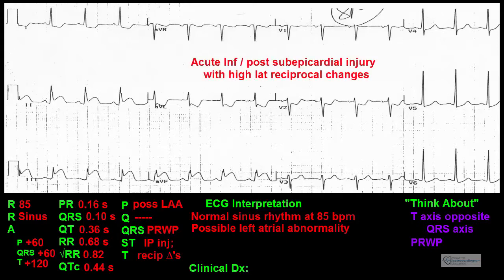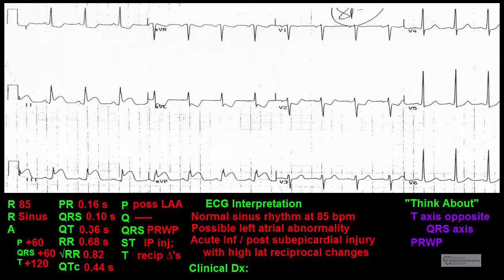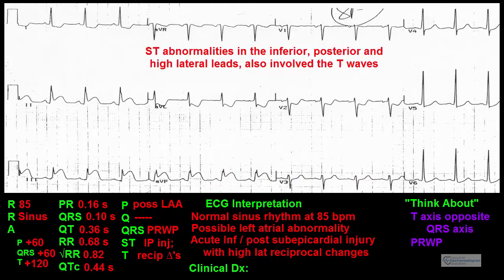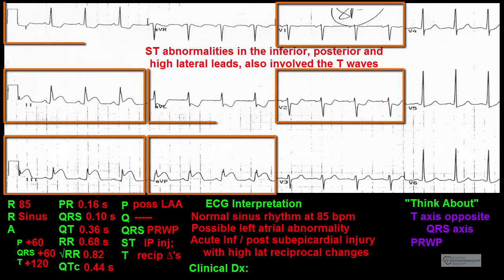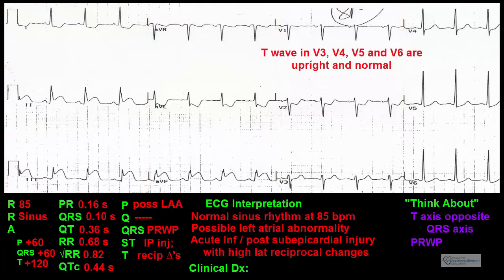Acute inferior and posterior subepicardial injury with high lateral changes is now put into the ECG diagnosis section. T waves: The abnormalities of the ST segments in the inferior, posterior, and high lateral leads also involve the T waves — no further comments need to be made about these. The T waves in leads V3, V4, V5, and V6 are all upright and normal.